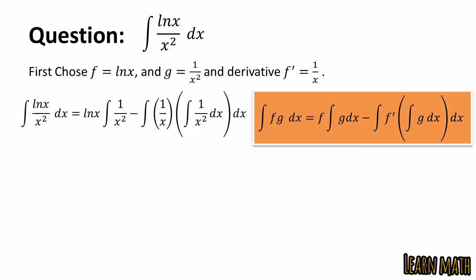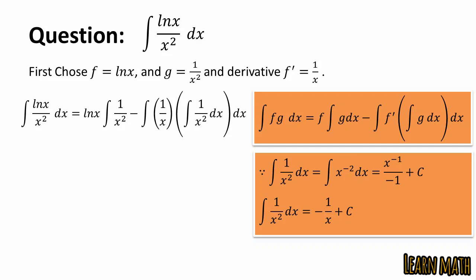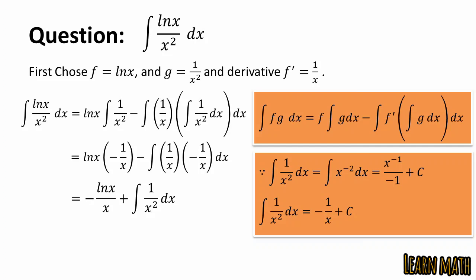The integration of 1 over x squared dx equals the integral of x to the power minus 2 dx. By using the power rule, this gives x to the power minus 1 divided by minus 1, which equals minus 1 over x plus c. Using this result, we write log x times minus 1 over x, minus the integral of 1 over x times minus 1 over x dx. Simplifying: minus log x over x plus the integral of 1 over x squared dx, which gives minus log x over x minus 1 over x plus c.